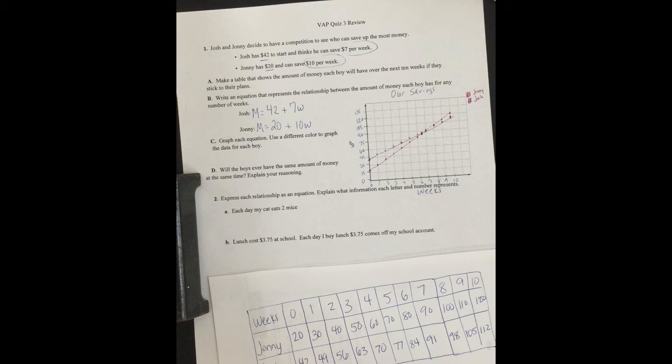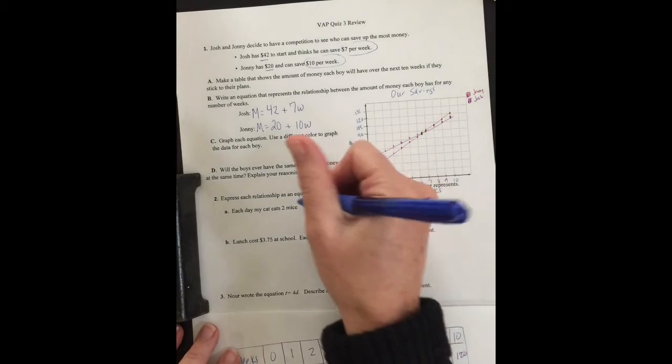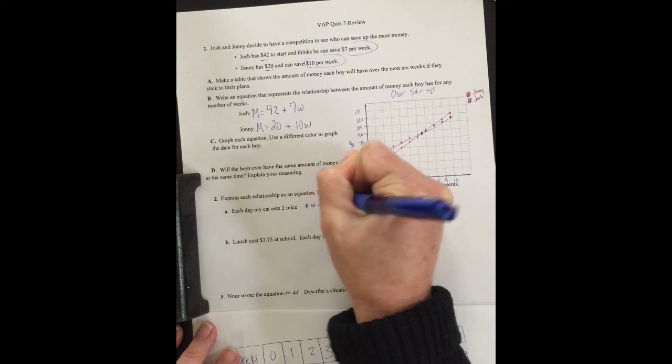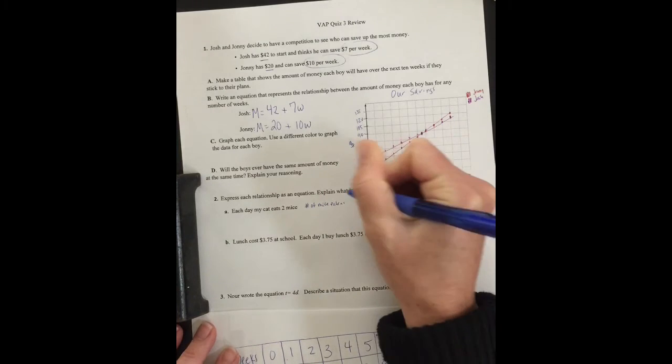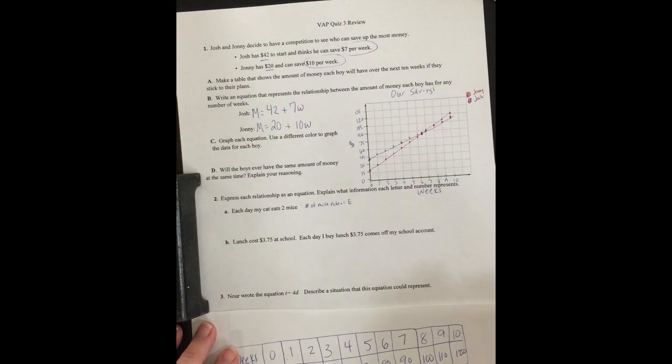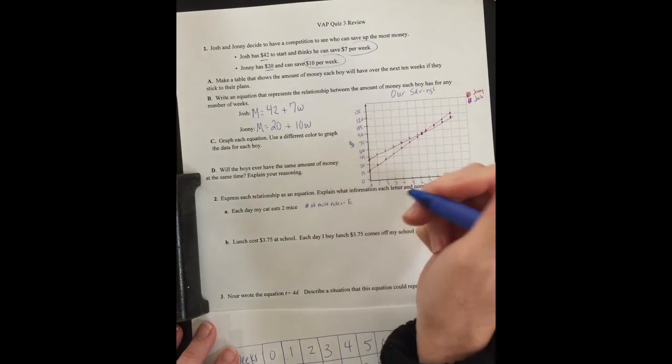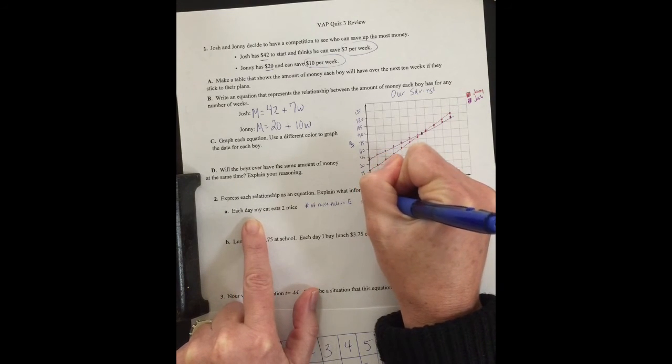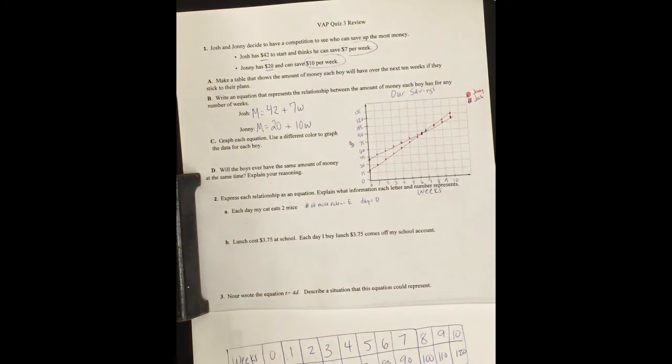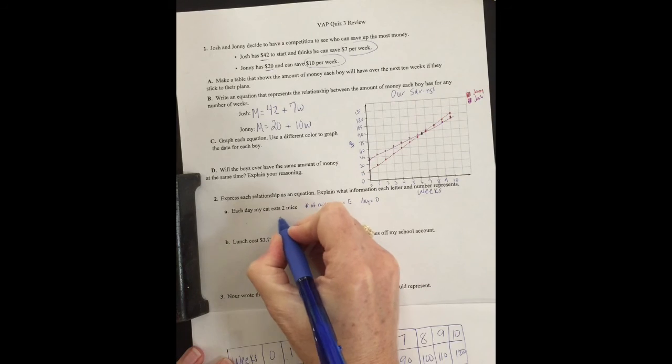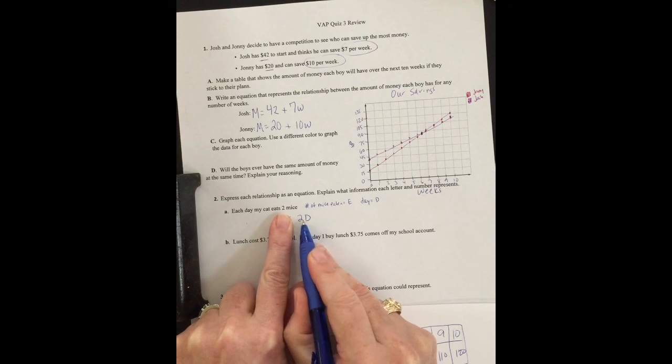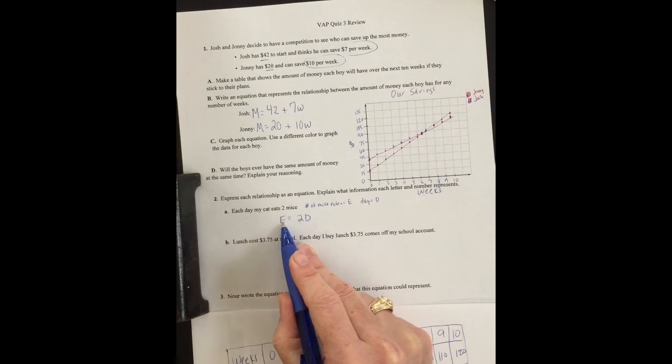Problem 2: Express each relationship as an equation. Explain what information each letter and number represents. Each day, my cat eats two mice. So, I'm going to say that the number of mice eaten, let's call it E. And then you could say, each day, so we need to represent day equals D. So, you would end up with the number of mice eaten, E, equals 2 times D. If you multiply how many days times 2, that would give you E, the number of mice eaten.